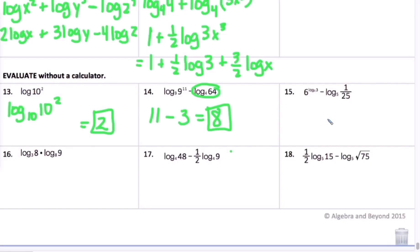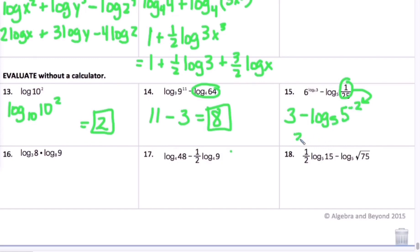Number 15 uses the exponential-logarithmic inverse property. We have 3 minus log base 5 of (1/25). Since 1/25 equals 5 to the negative 2 power and the bases match, that log equals negative 2. So we get 3 minus negative 2, which equals 5. I'll also put a graphing calculator reference sheet with this lesson so you can verify using the graphing calculator.